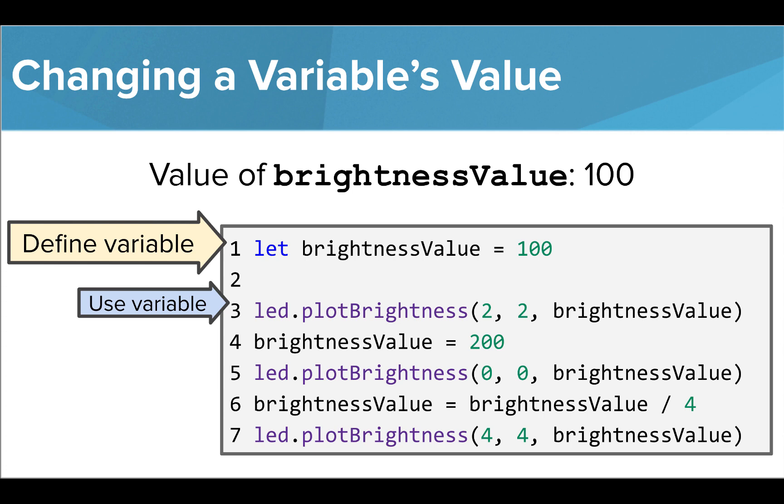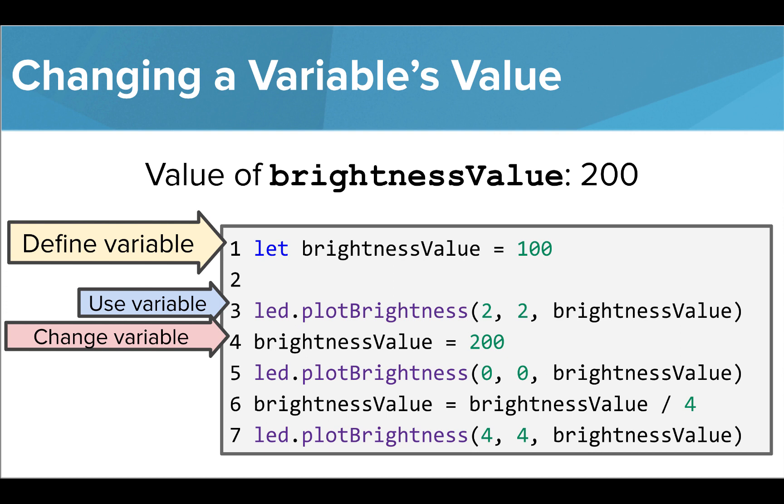After we've lit the LED, we are changing the value of the brightnessValue variable to 200 on line 4. So when we use this variable to set the brightness of another LED on line 5, it will now have a brightness of 200.